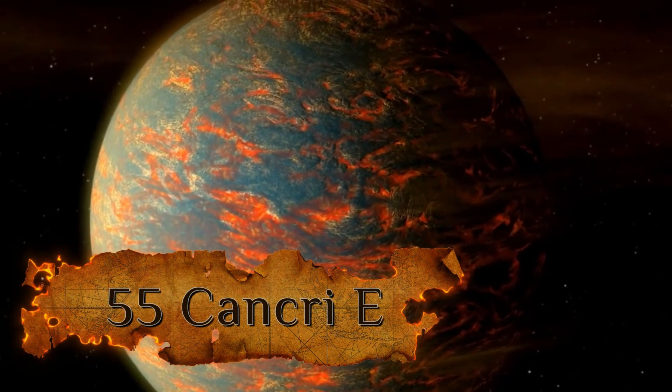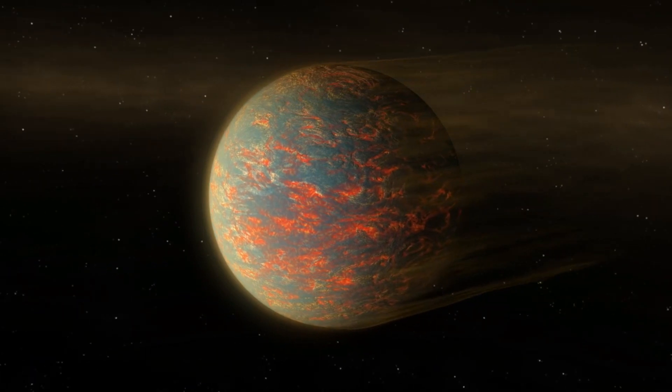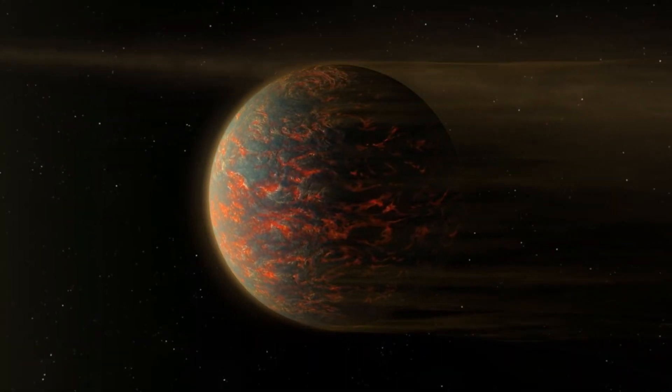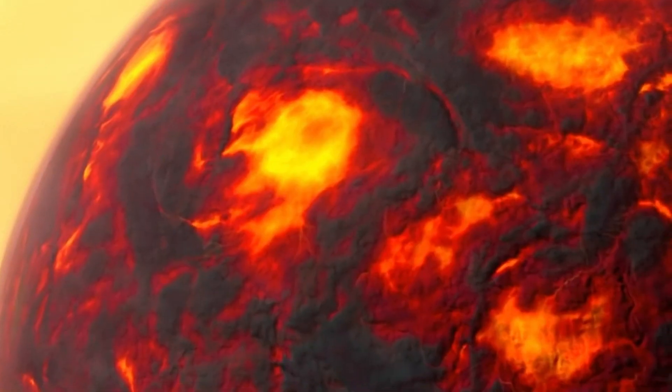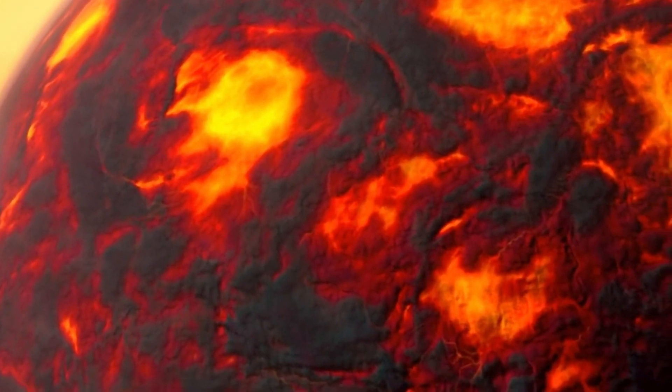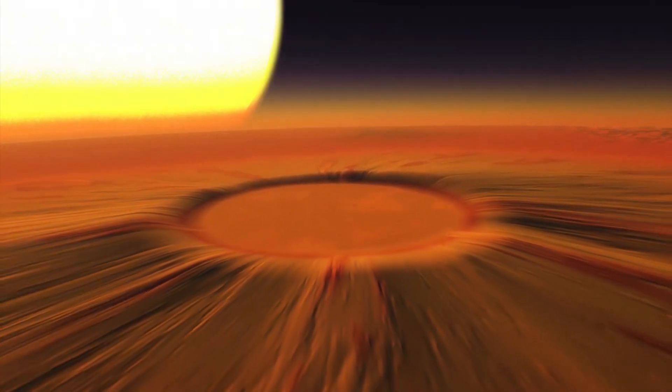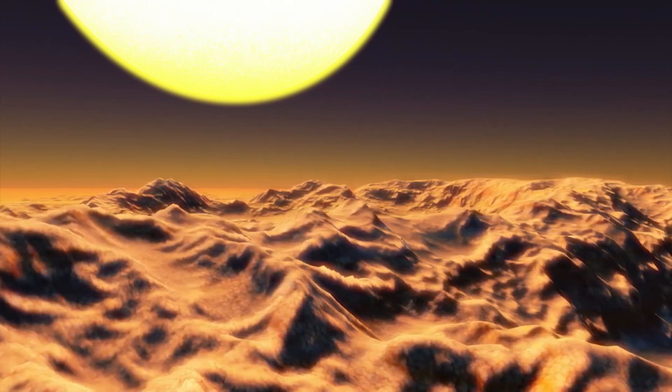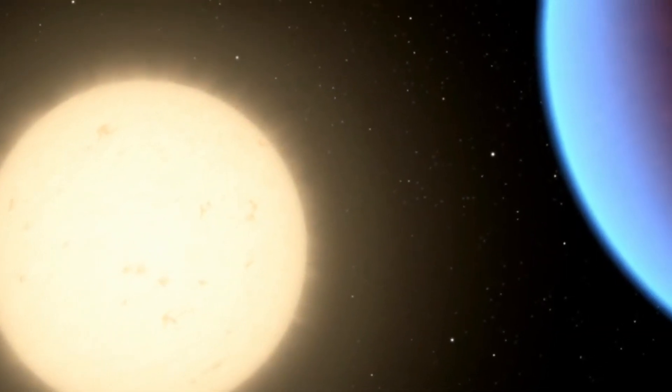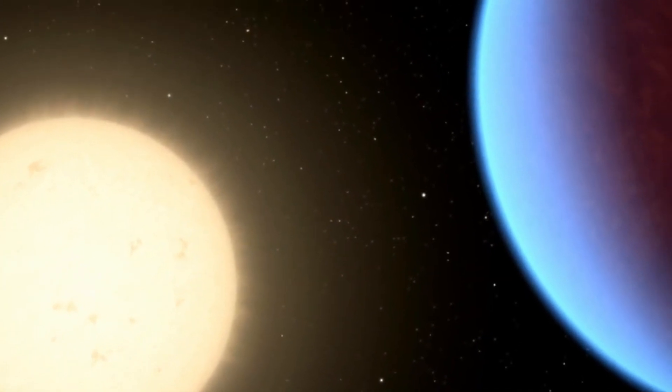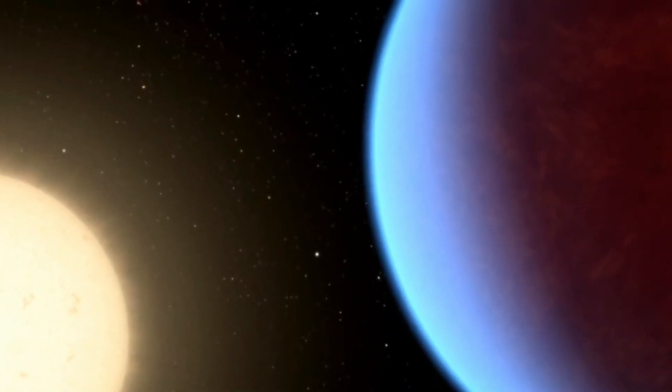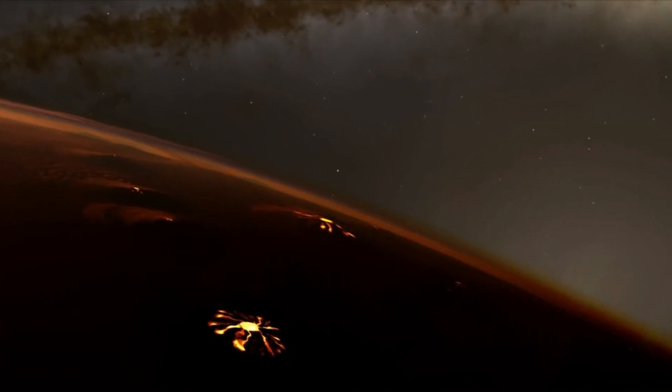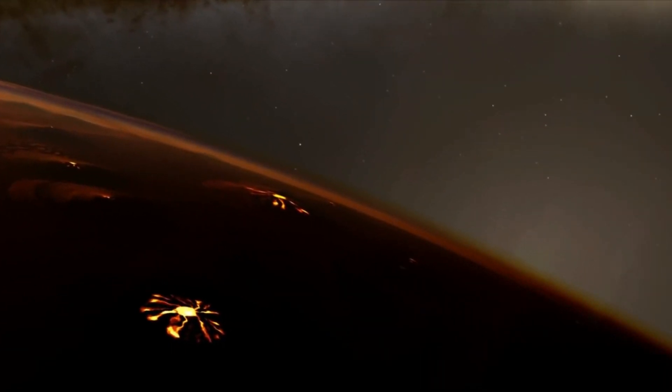Number 3: 55 Cancri E. This planet is about the size of two Earths and has an orbital cycle of about seven Earth days. This planet is 40 light-years away and is also called Janssen. It's best known for being made up of about one-third diamond. This could be because the planet's atmosphere is mostly carbon, which when mixed with heat and pressure turns the planet's mass into diamond. At the moment, it's thought to be worth around $26.9 quintillion dollars.